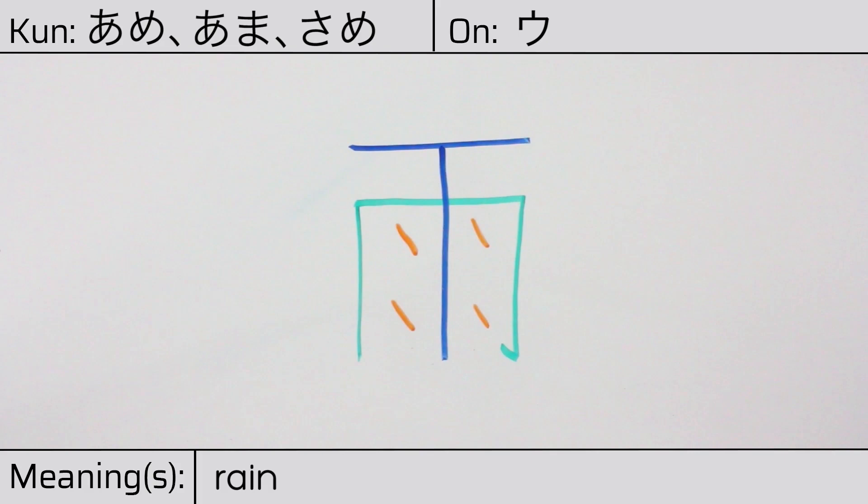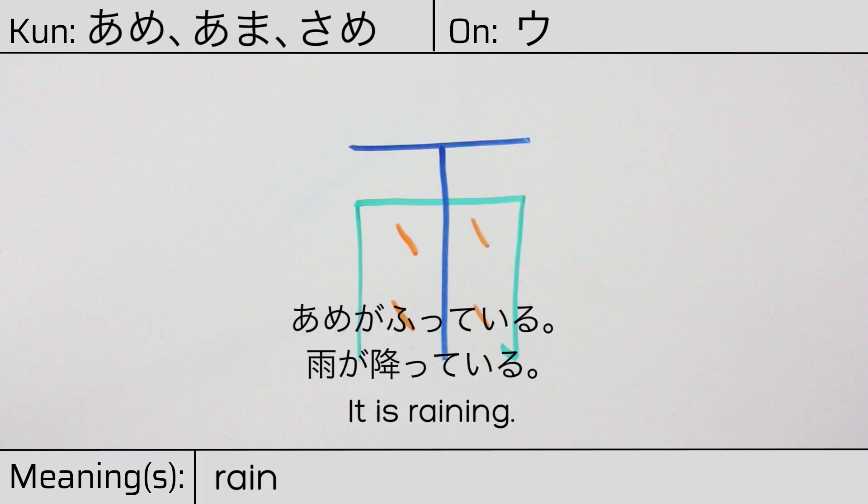You can remember this kanji by thinking of it as rain on a window or umbrella. Our example sentence is Ame ga fute iru. It is raining.